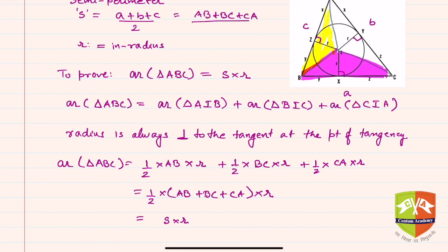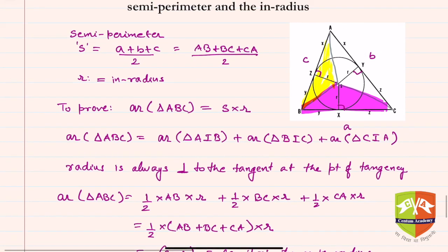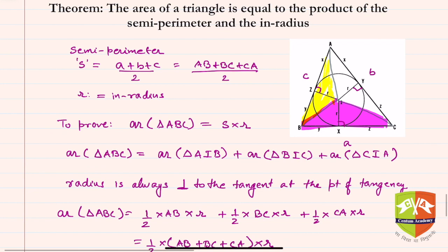Hence we got the desired result, which is equal to semi-perimeter into in-radius. This is what we achieved. So always remember, area of a triangle is always equal to the semi-perimeter multiplied by its in-radius.